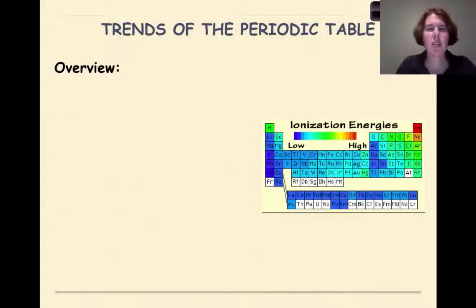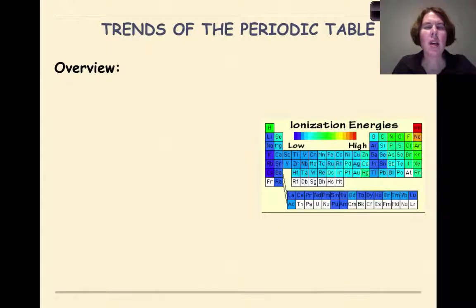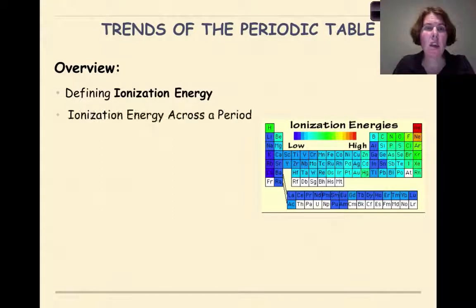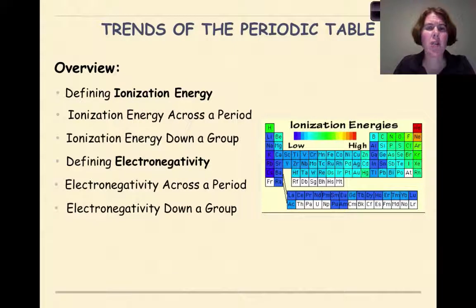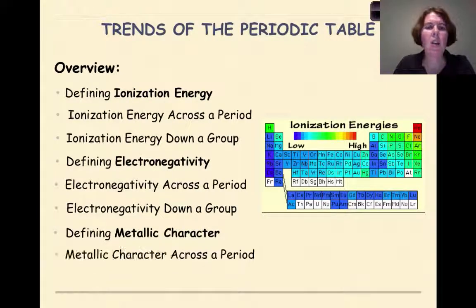Hi, my name is Dr. English and today we're going to continue our conversation about trends of the periodic table. Specifically in this tutorial we're going to be looking at ionization and the trends of ionization across the period and down a group. Then we're going to look at electronegativity across the period and down a group, and then finally metallic character across the period and then down a group.